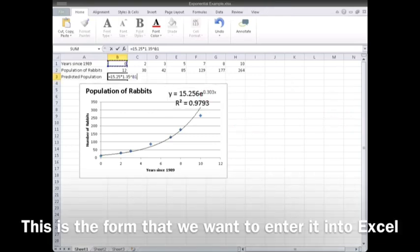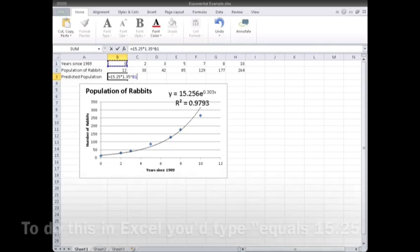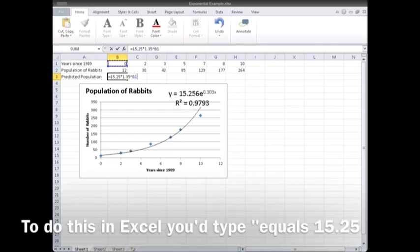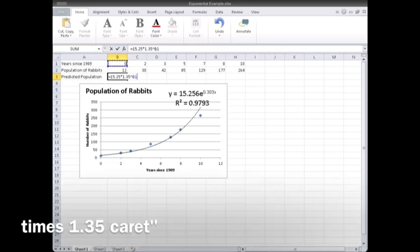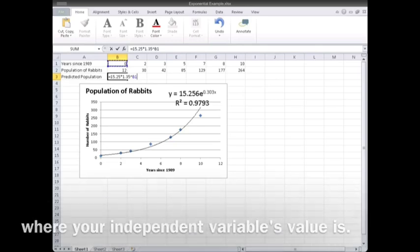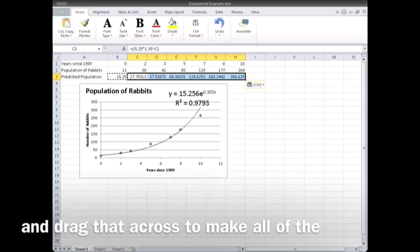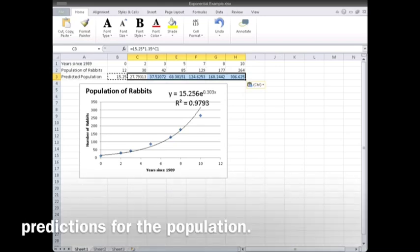This is the form that we want to enter it into Excel to make our predictions. To do this in Excel, you'd type equals 15.256 times 1.35 carat, and then a cell reference to the cell where your independent variable's value is. Then you can press Enter and drag that across to make all of the predictions for the population.